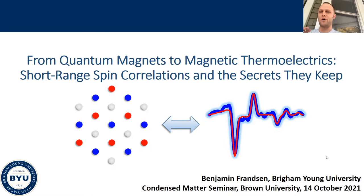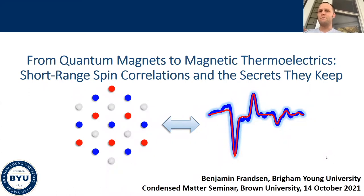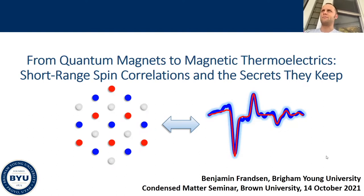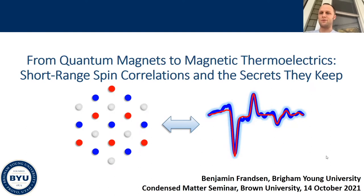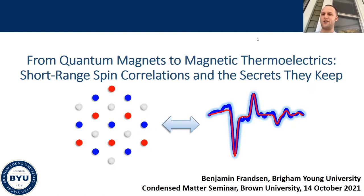In particular, he's really pioneered this work using total neutron scattering measurements to measure short-range magnetic correlations in real space. He also has some really nice work that gives some microscopic insights into the nematic orders that show up in iron-based superconductors. So I think he's going to talk about some of these really nice measurements today. Ben, thanks for talking and go ahead.